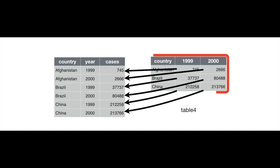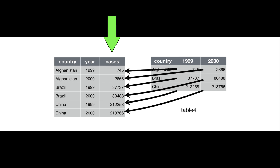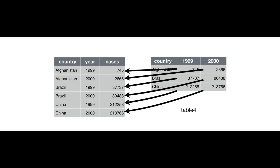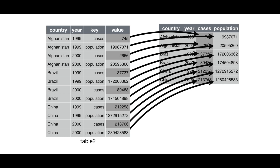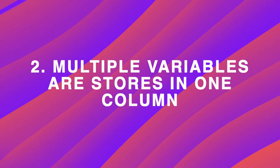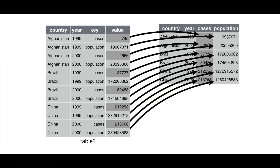Making this wide dataset longer creates two new variables, which immediately allows us to study the change in tuberculosis cases over time for every country. So every combination of a country and a year becomes a single observation of tuberculosis cases, and with that, a single row. But if we overdo that, we can end up with the second most common problem, where multiple variables are stored in one column.